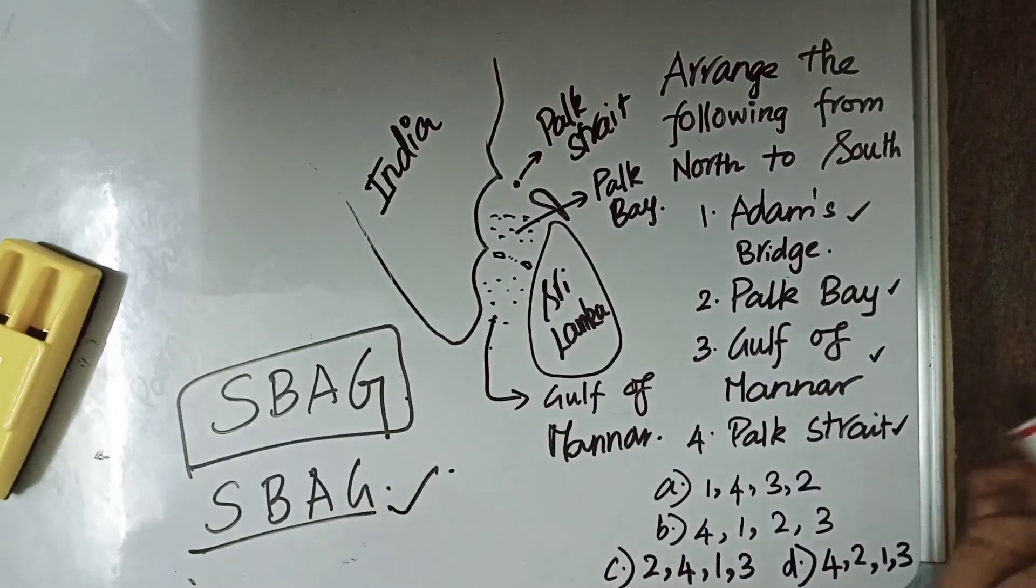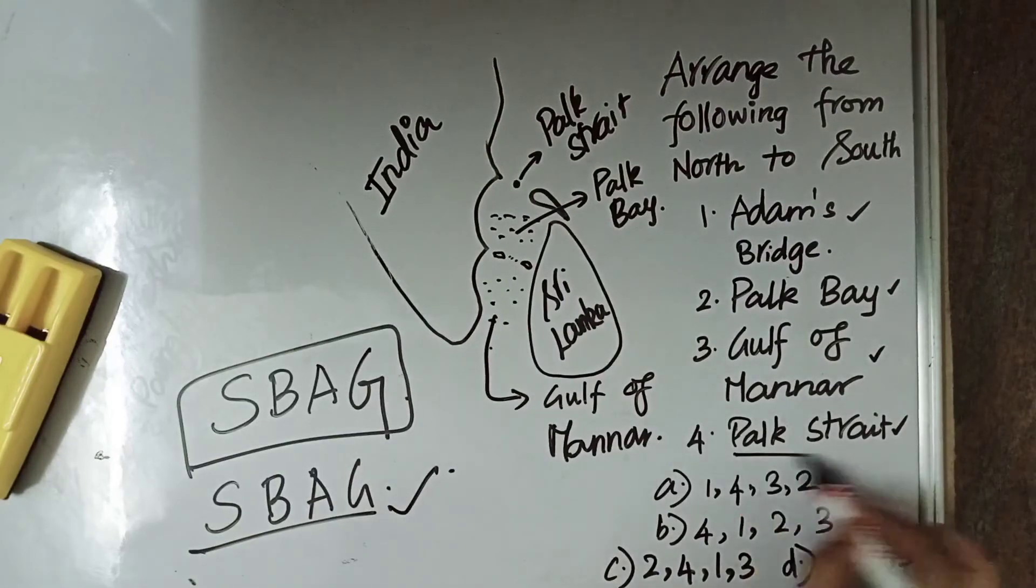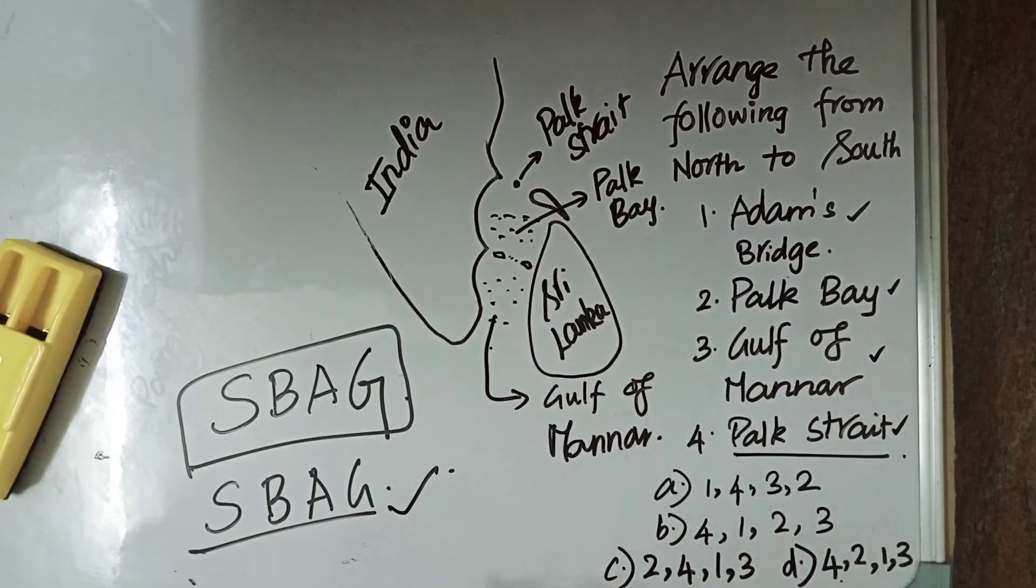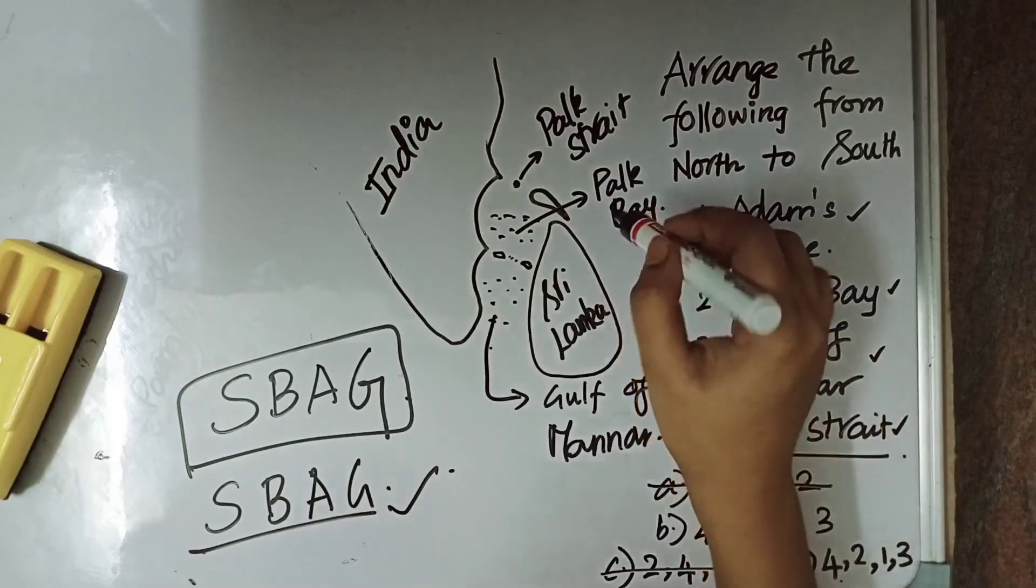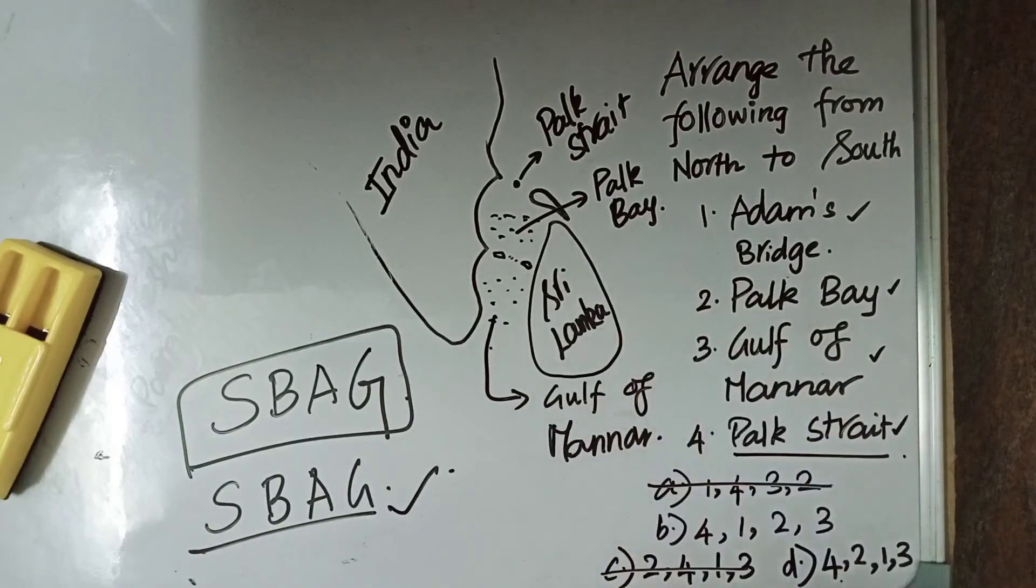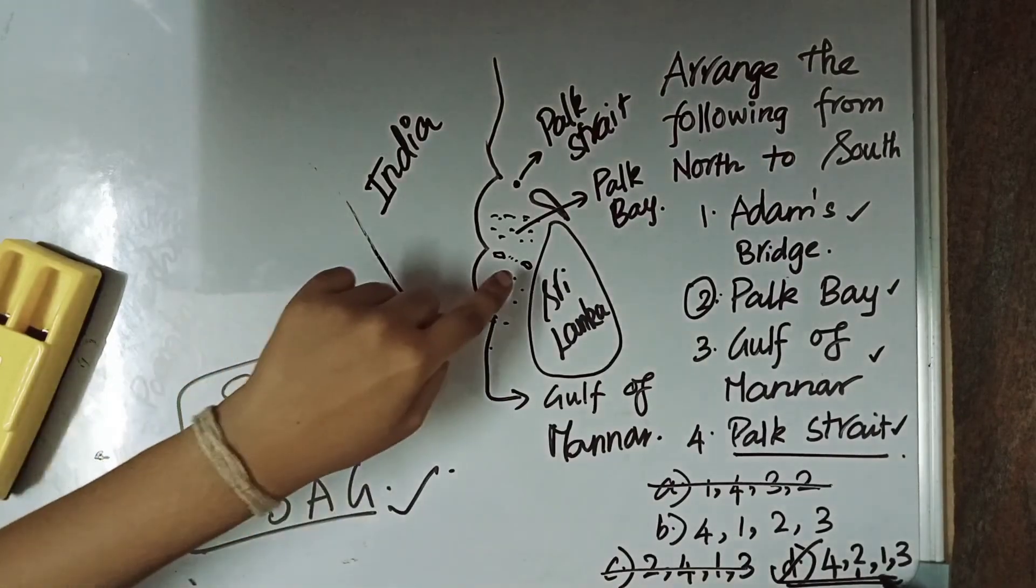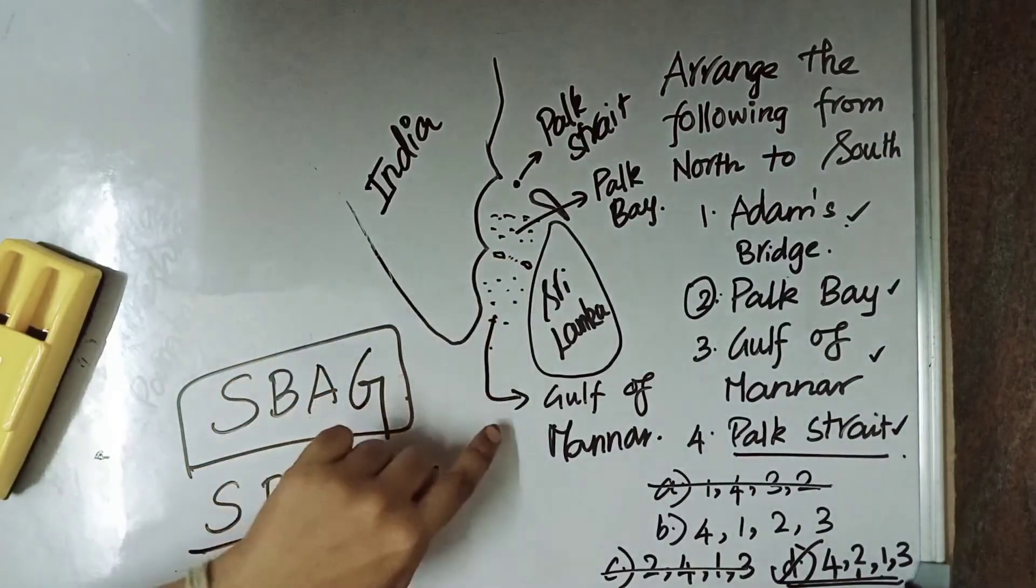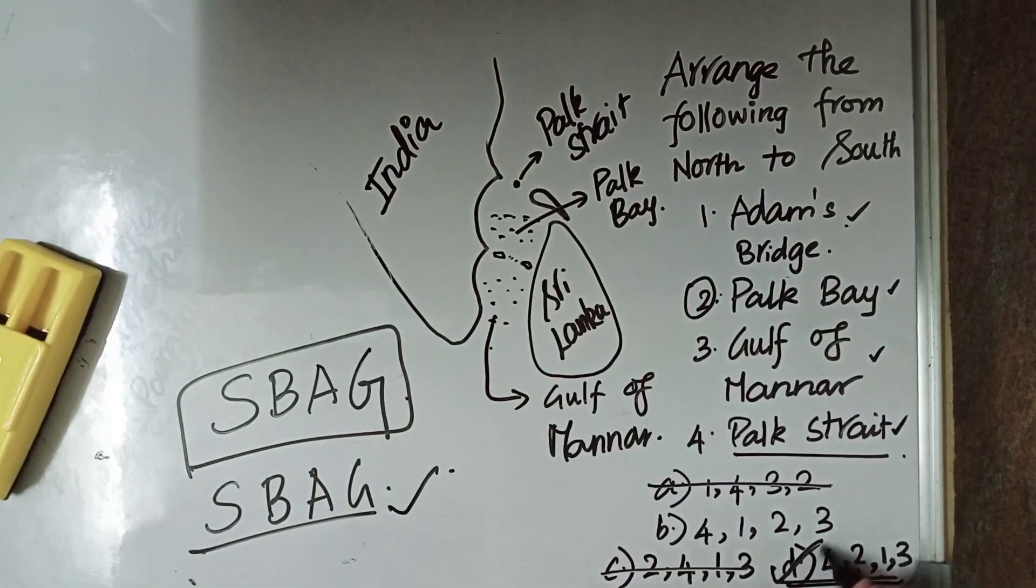Let us answer this question. First we will be having Park Strait. So, 4 will be first. So, option A and C are neglected. Then Park Bay is the second one. So D is the option which has Park Bay in the second. And after that we have Adams Bridge. Then we have Gulf of Mannar. So, D is the correct answer.